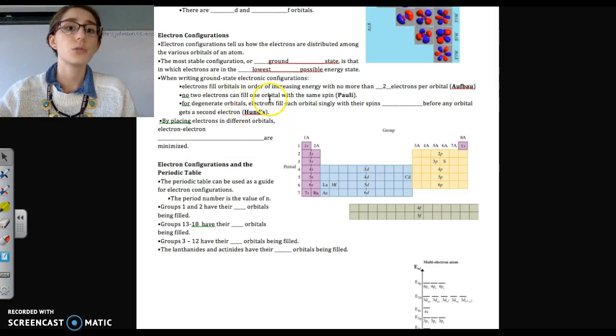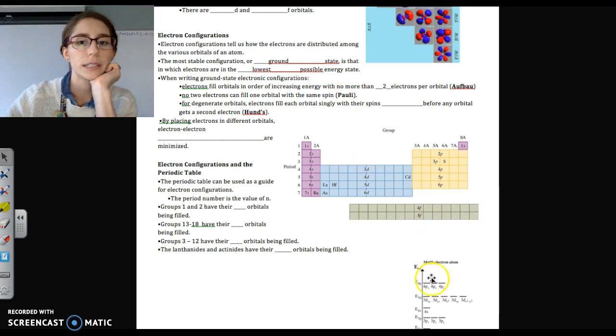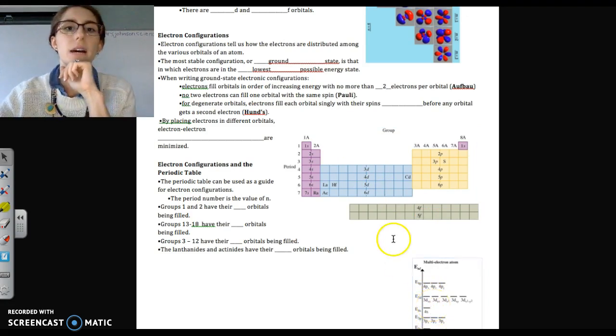And no two electrons can fill one orbital with the same spin. That's the Pauli exclusion principle. So when we're filling each orbital line, we would write spin up, spin down, if we were actually drawing in the electrons. Remember, they're going to have opposite spins.